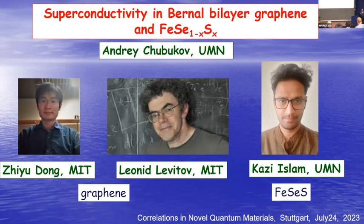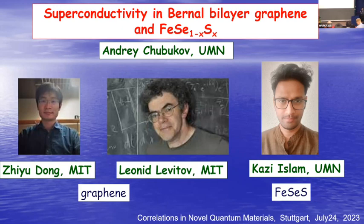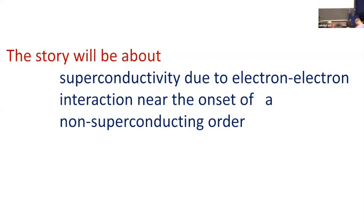One will be superconductivity in bilayer graphene — untwisted, it's Bernal bilayer graphene — and the second will be superconductivity in either pure or mostly doped iron selenide when you bring it to the point when nematic order disappears. The first work was done with a wonderful student of Lenny Levitov, Jia-dong from MIT, and with Lenny himself, and the second was done with my student Kazi Islam from Minnesota.